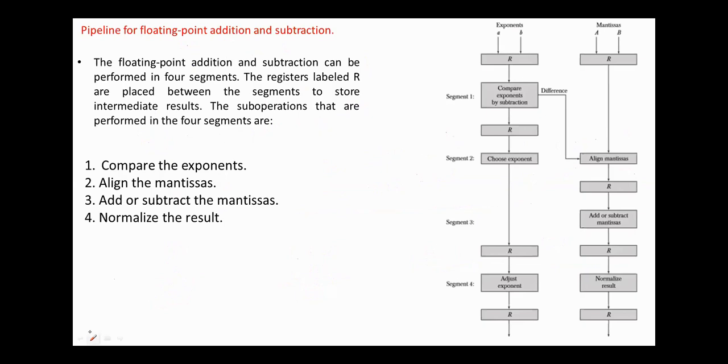The floating-point addition and subtraction can be performed in four segments. The registers are placed between the segments to store intermediate results, or as I mentioned in the previous video, they act as buffers. The sub-operations performed in the four segments are: